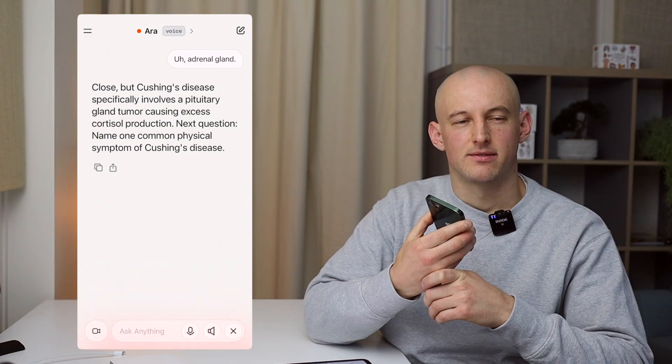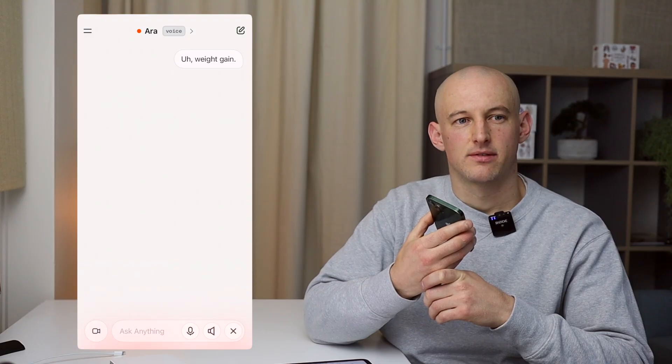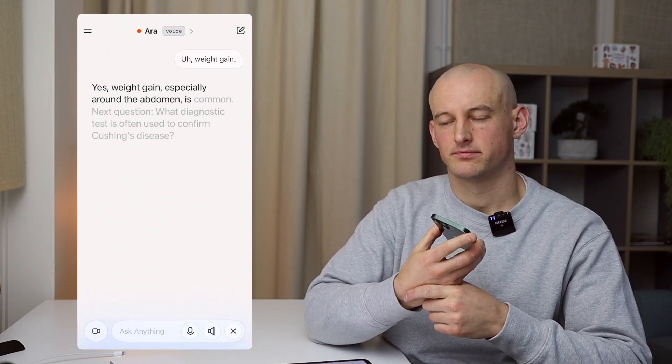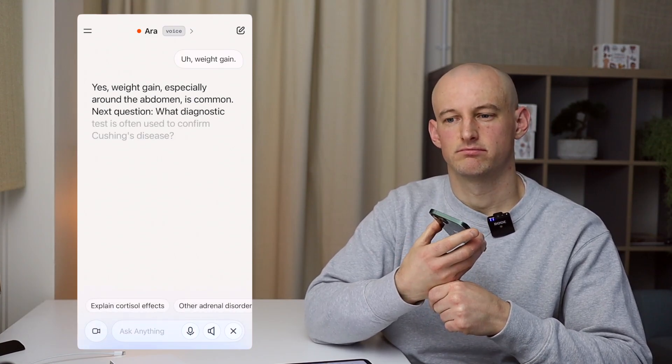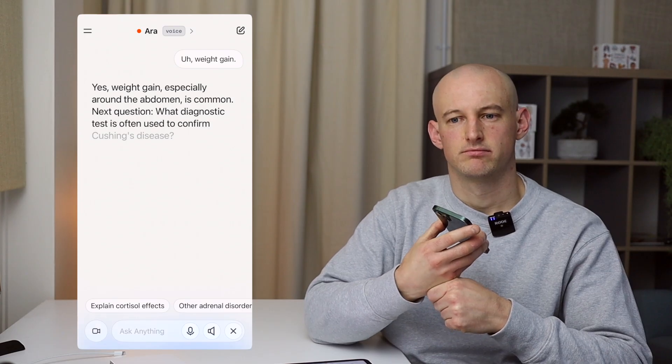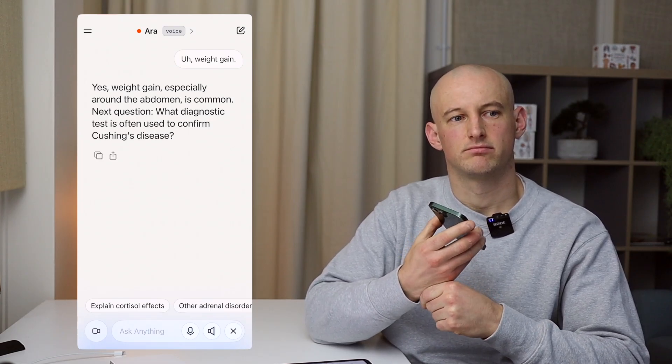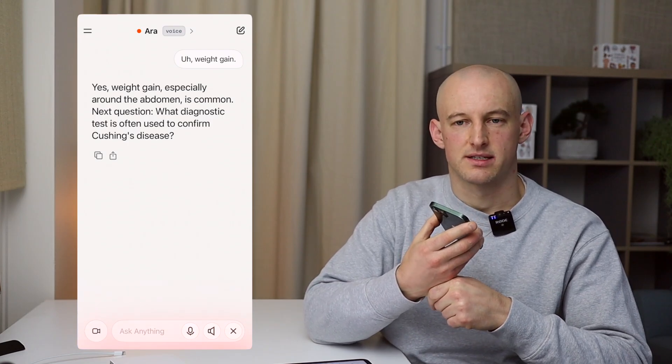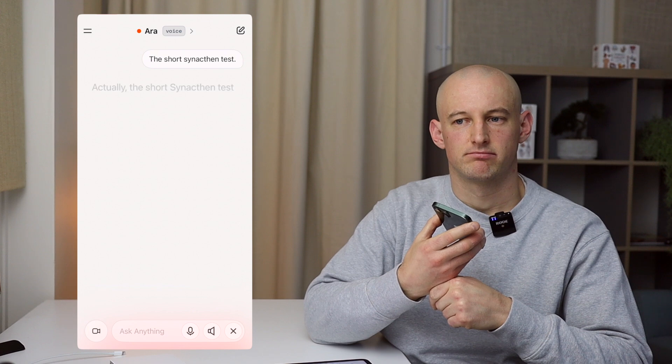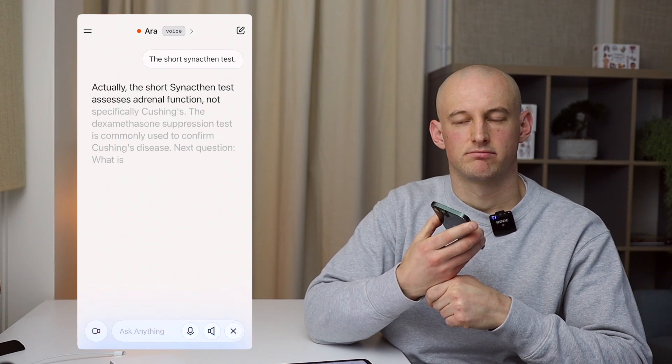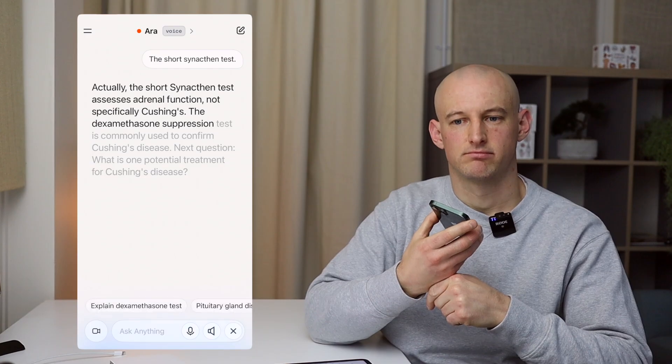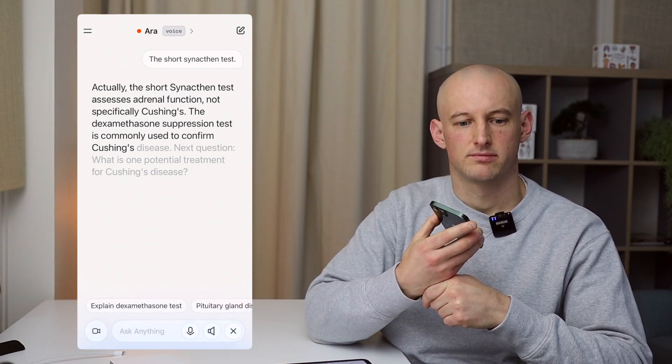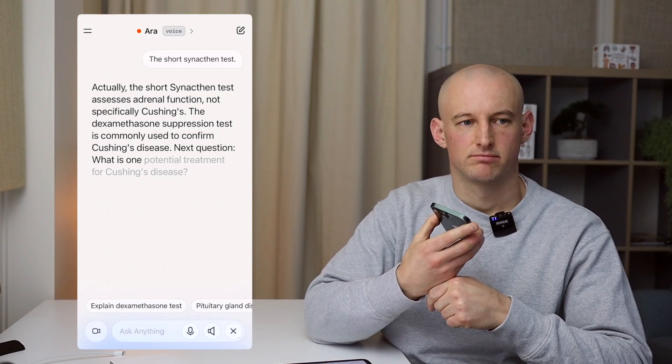Close. Cushing's disease specifically involves a pituitary gland tumour causing excess cortisol production. Next question. Name one common physical symptom of Cushing's disease? Weight gain. Yes, weight gain, especially around the abdomen, is common. Next question. What diagnostic test is often used to confirm Cushing's disease?